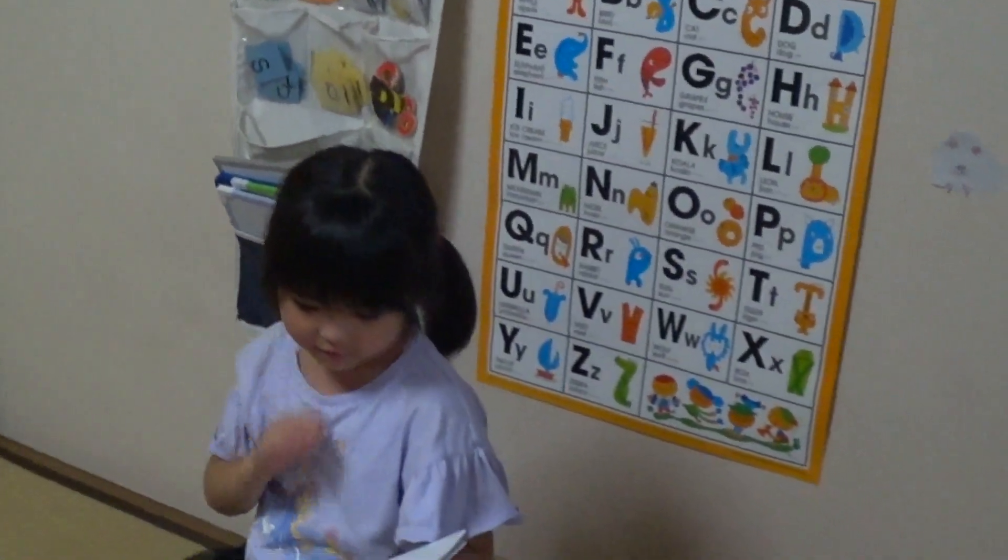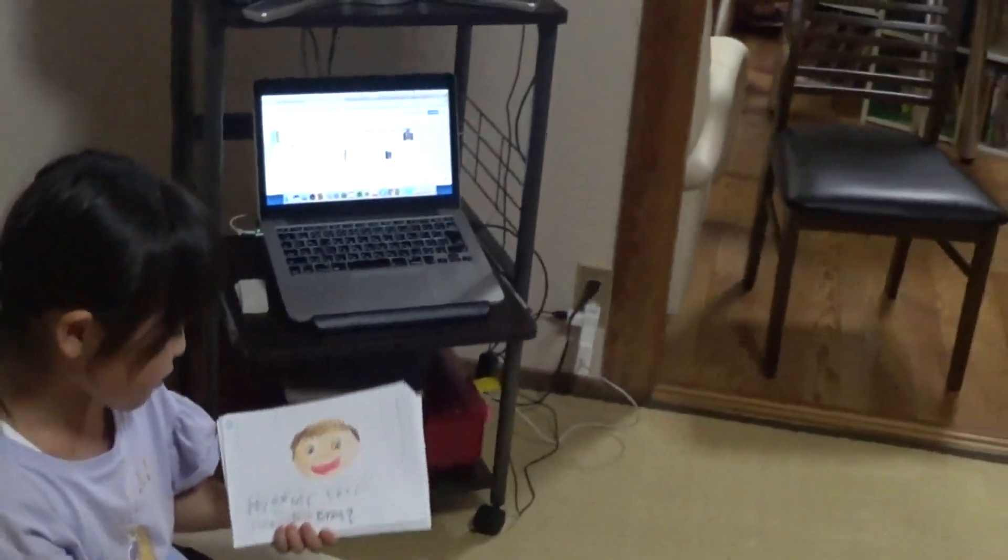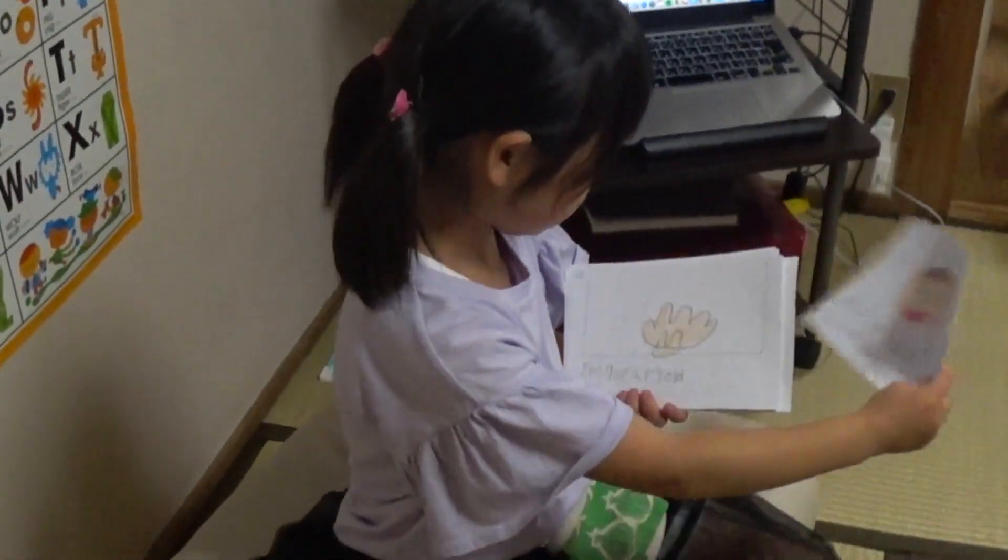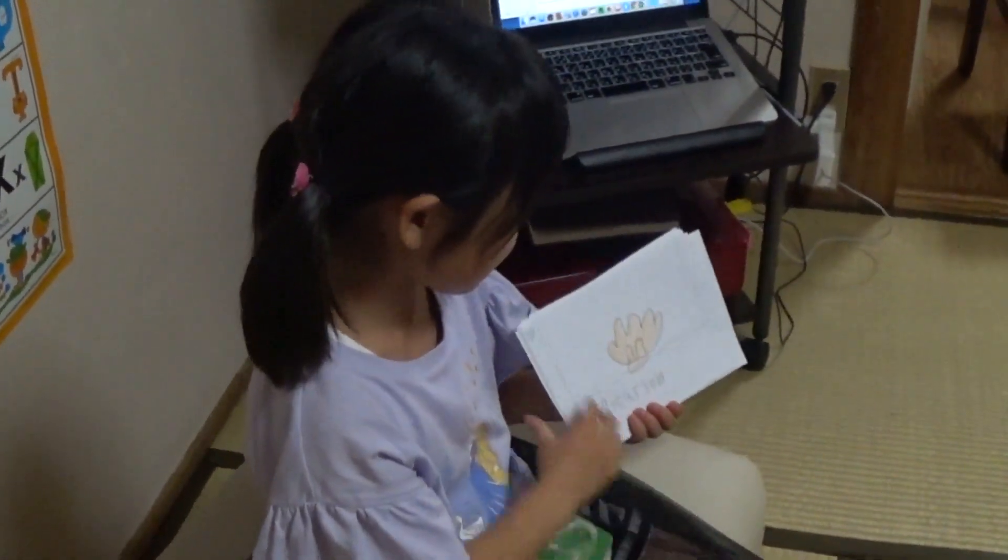My name is Kotomi. It's nice to meet you. Hi Mr. Chris. How old are you? I'm seven years old.